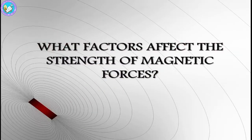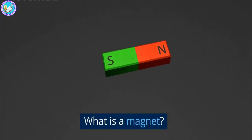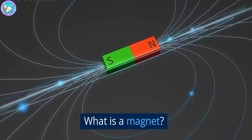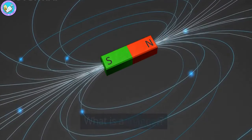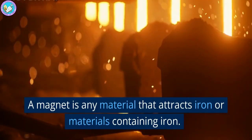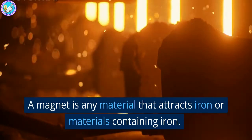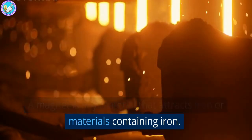Here we can see what are the factors which can affect the strength of the magnetic forces. You are going to see how the magnetic forces are applied to magnets. The first thing is it can be changed due to the size of an object or materials of an object, or it might depend on the temperature of the object. These three things are very important factors which can affect the strength of the magnetic forces.